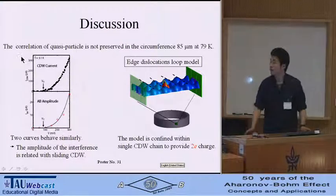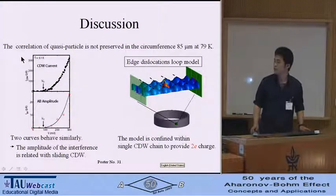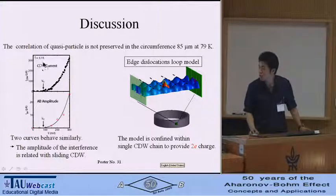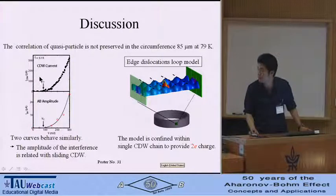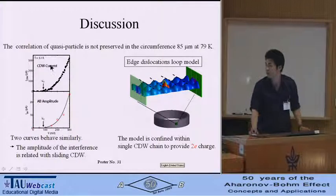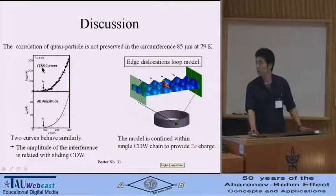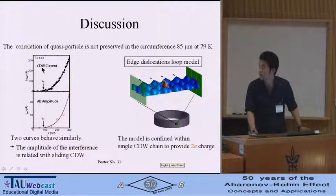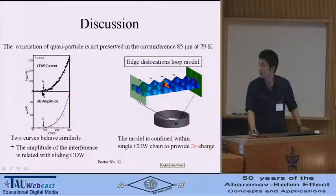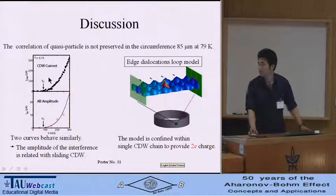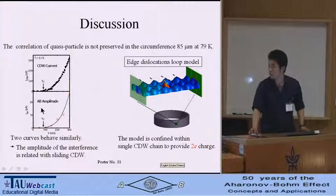Next, we discuss this oscillation. The top panel shows current-voltage characteristics in our samples, after removing ohmic components. CDW currents develop at large voltage above the threshold voltage. The bottom panel shows the AV amplitude of the h/2e oscillation.